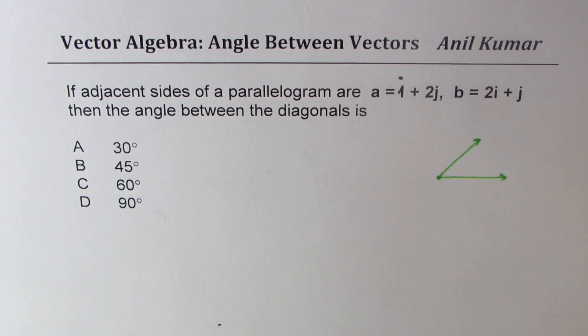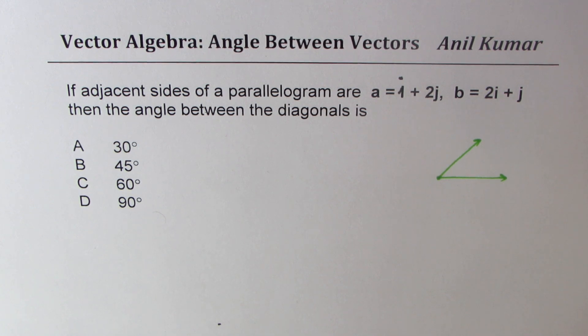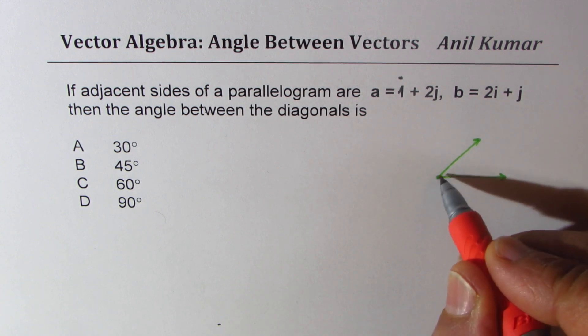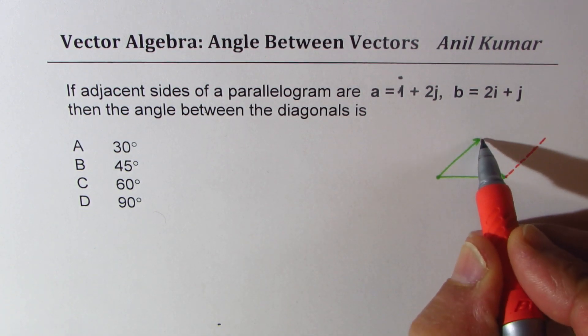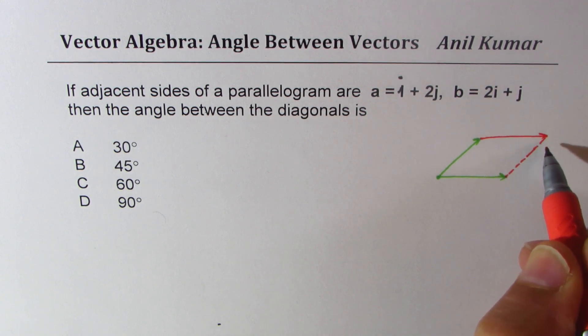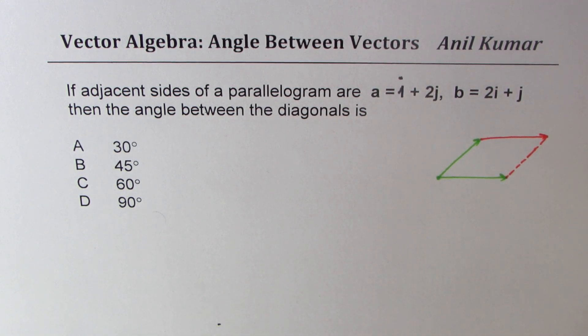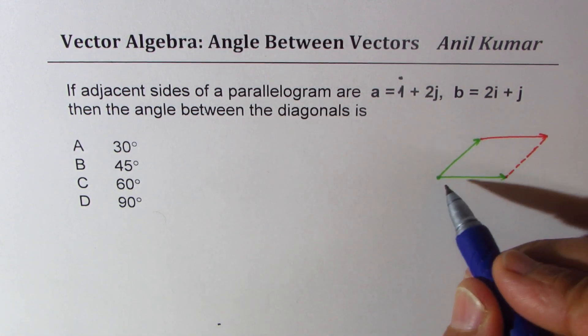In that case, we need to find the angle between the diagonals. So first let us make the parallelogram, drawing a line parallel to this on this side and on this also, so that forms a parallelogram. Diagonals are - let's say this is one of the diagonal and this is the other diagonal.